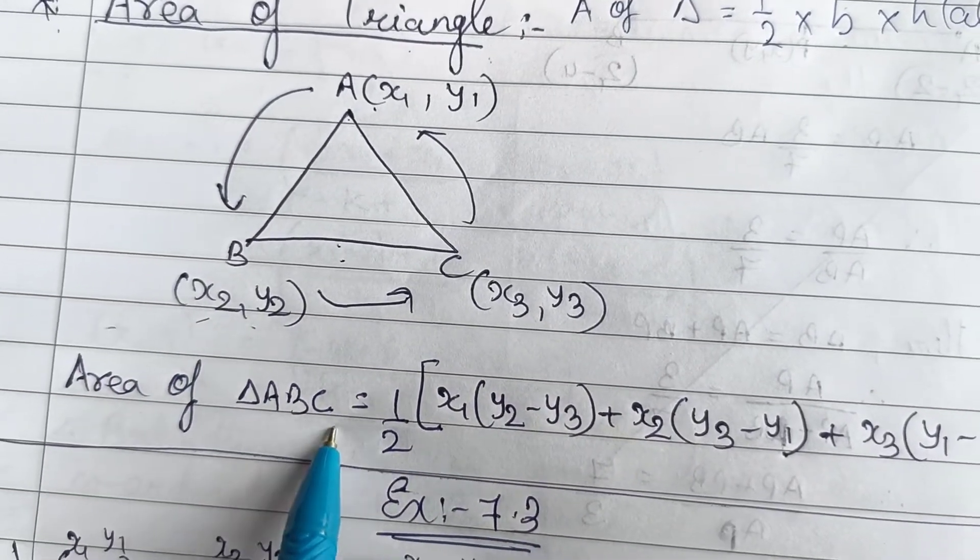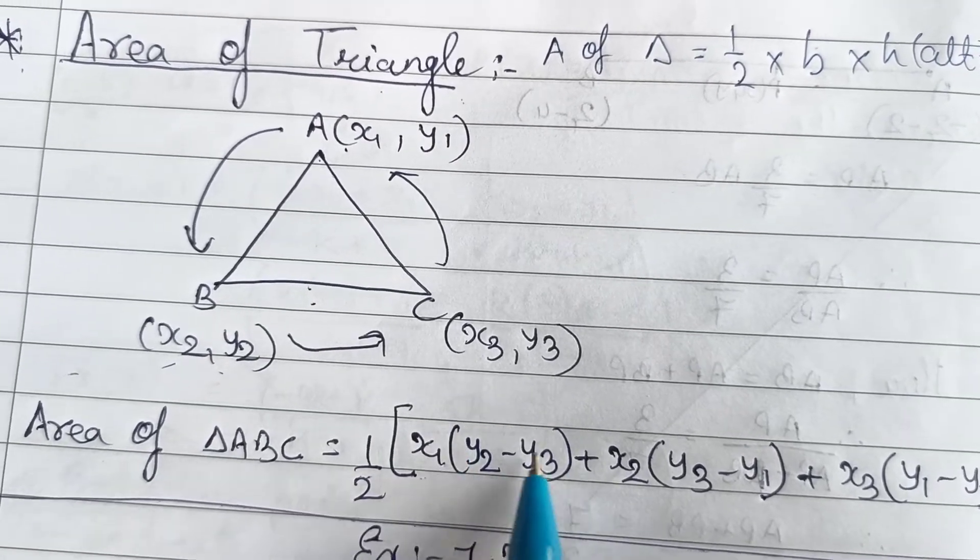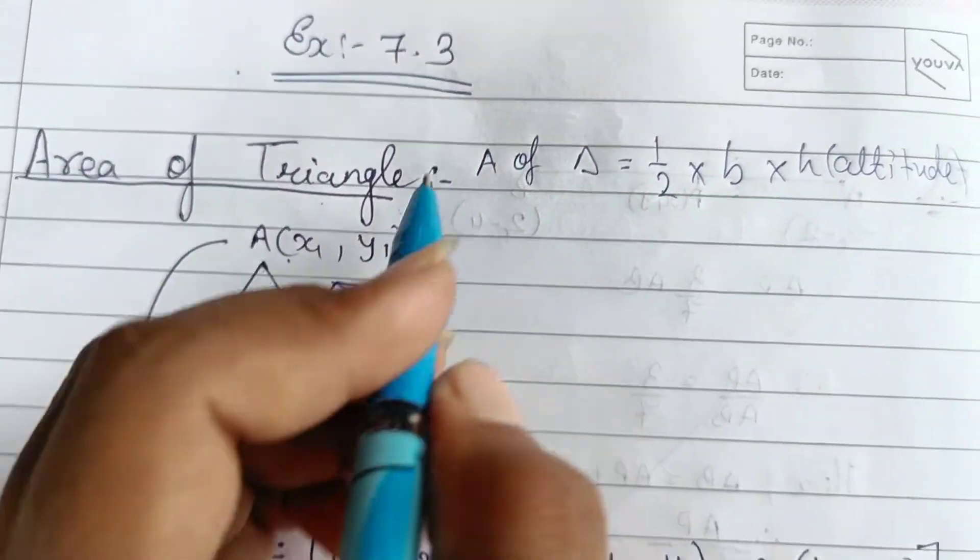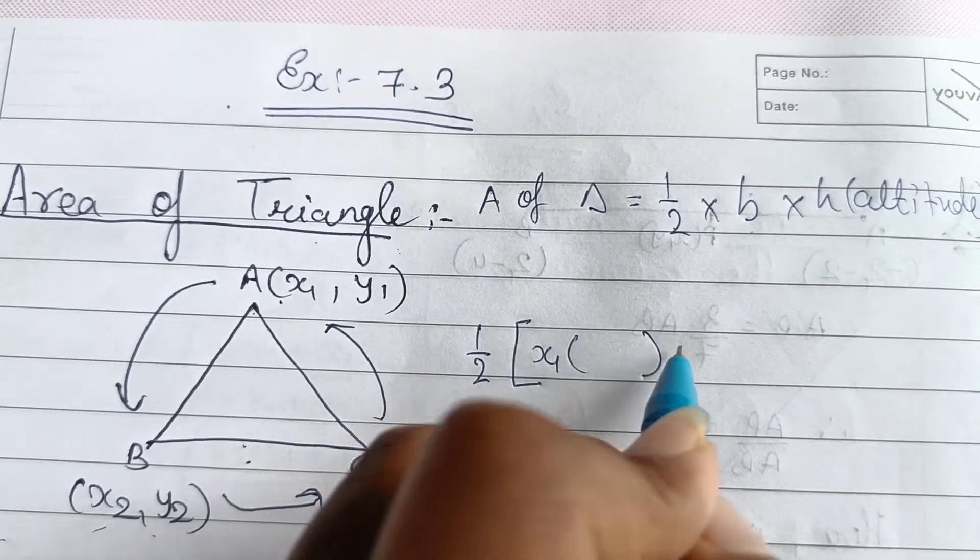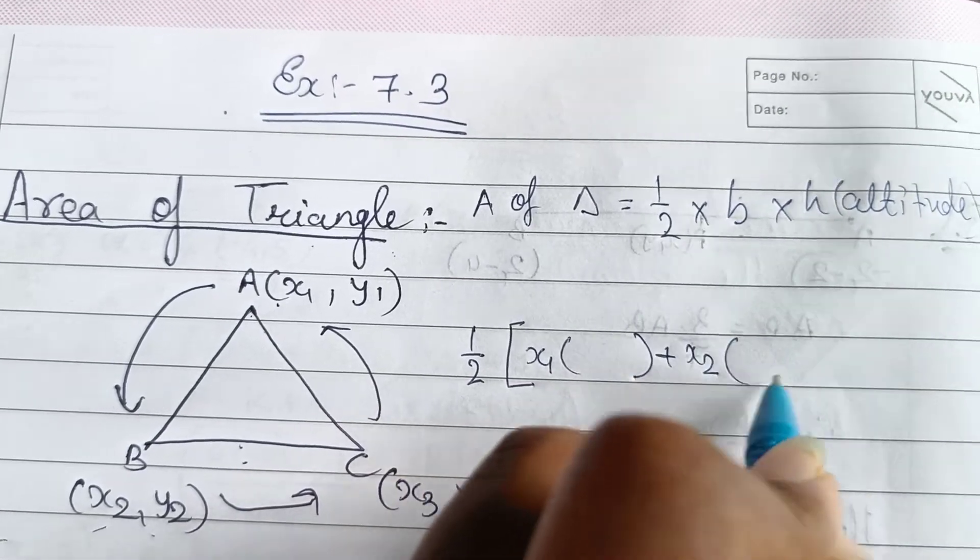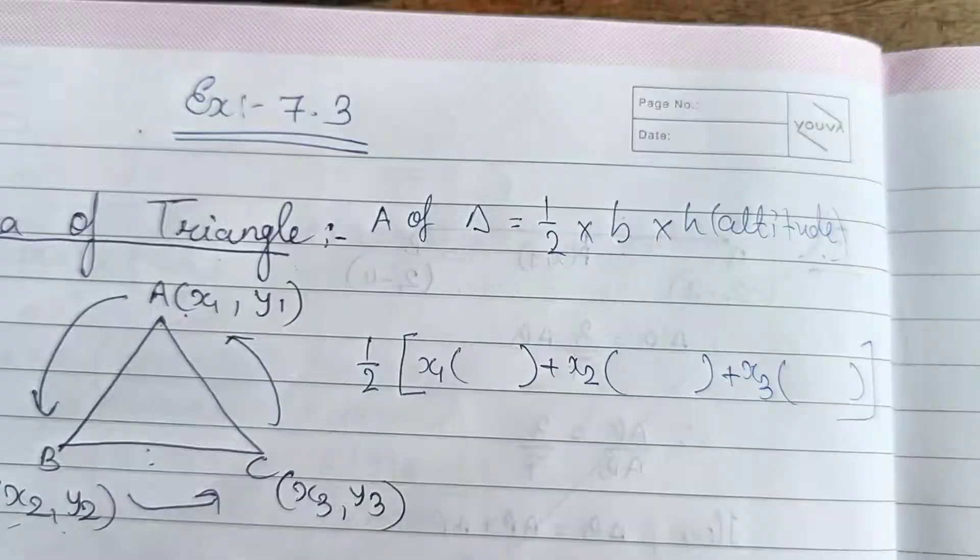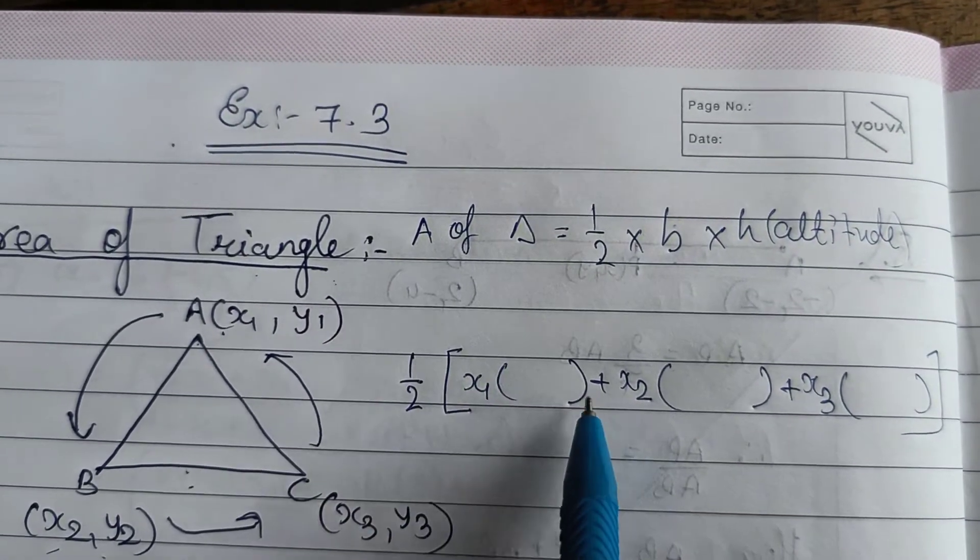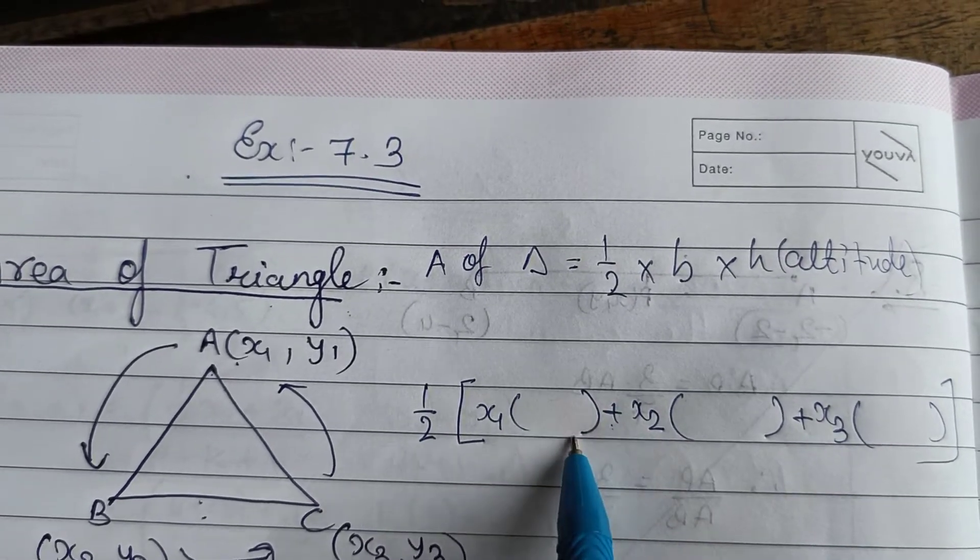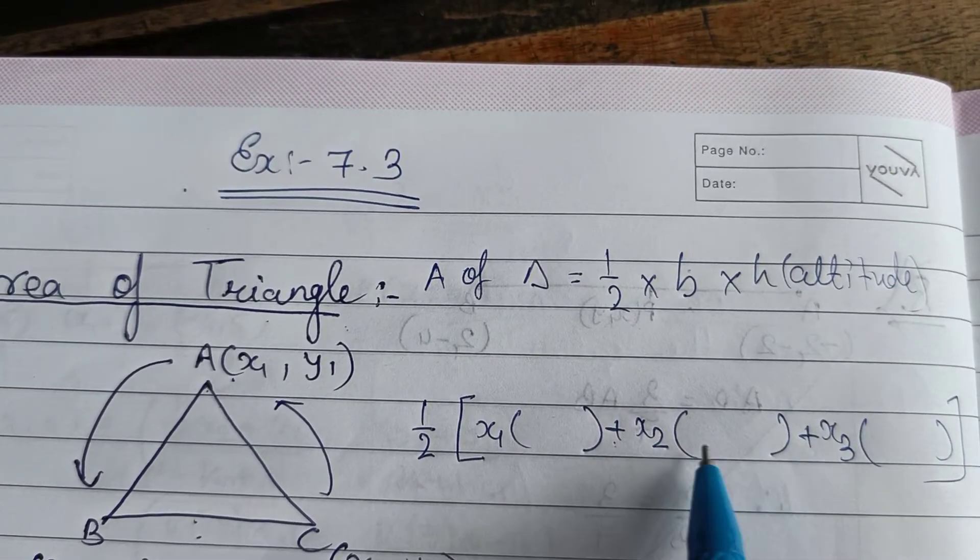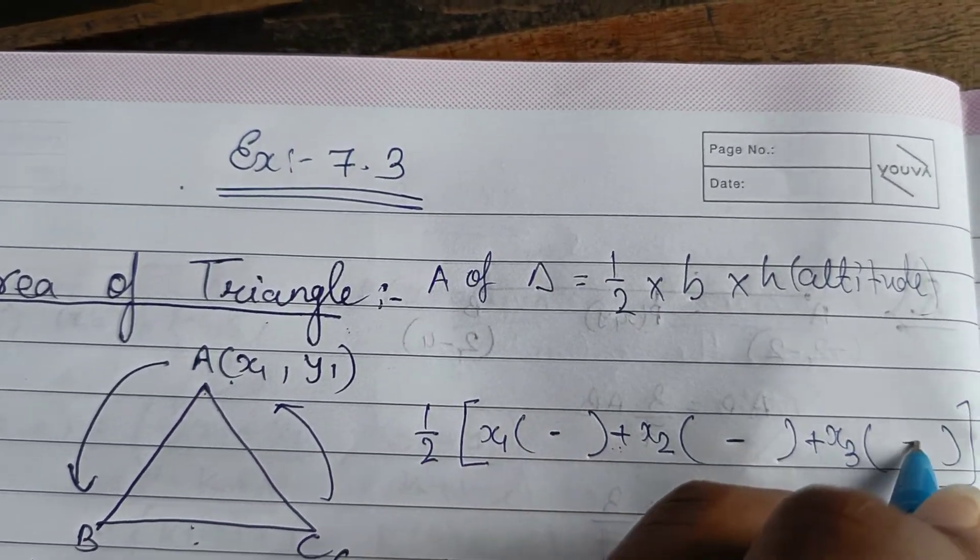Now your area of triangle, the formula will go like half multiplied by x1, this bracket. See I am explaining you. x1 leave this bracket as it is, plus x2 leave this bracket as it is, plus x3 and leave this bracket of x3 as it is. Now outside you have to do plus, and inside of this bracket you have to put minus sign everywhere.